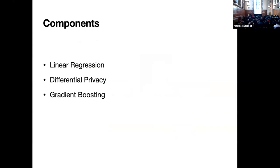We're going to have three components. The first one is linear regression, then we're going to do linear regression with differential privacy guarantees, and then we're trying to improve the state of the art from maybe 2020 using gradient boosting.